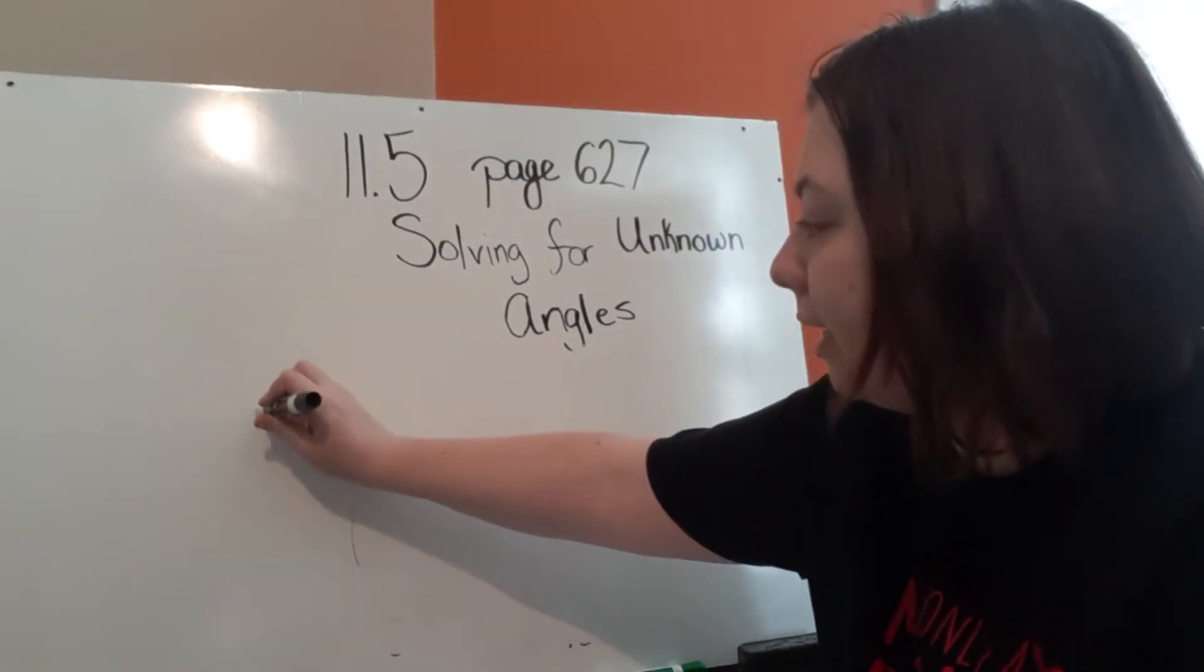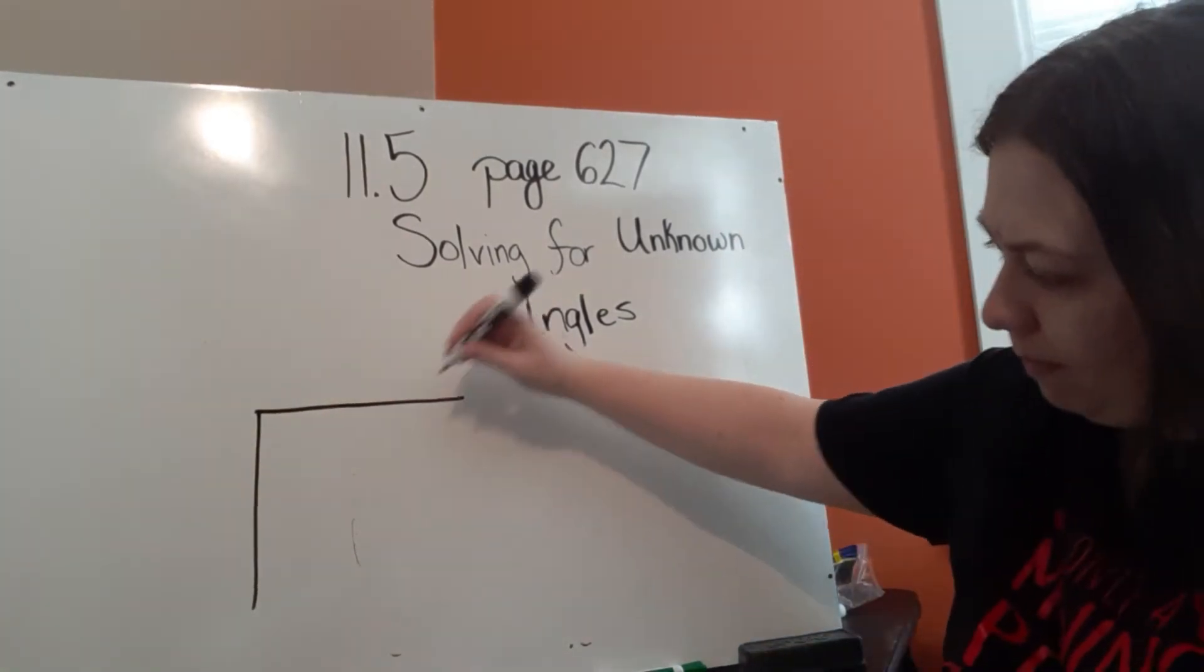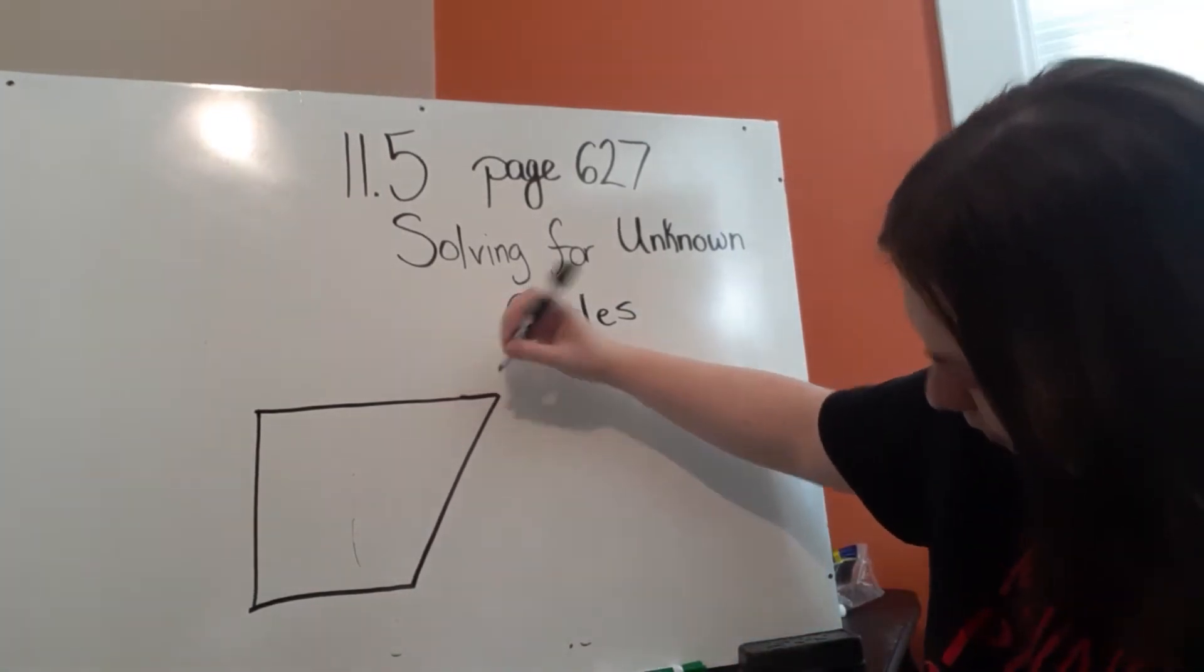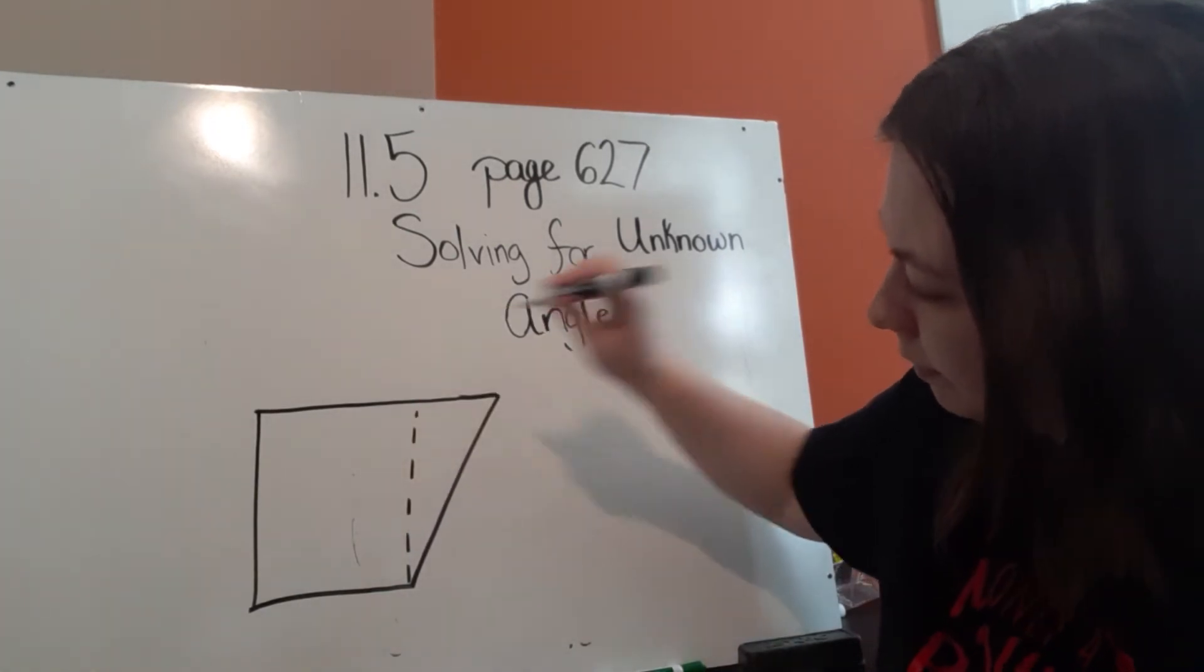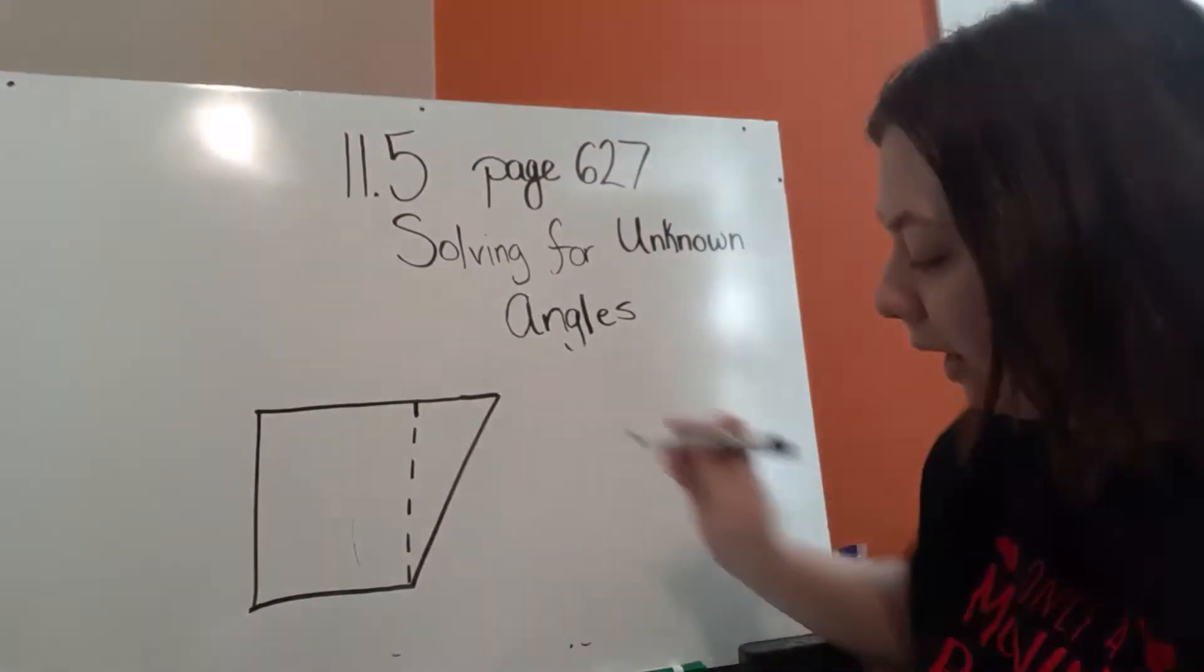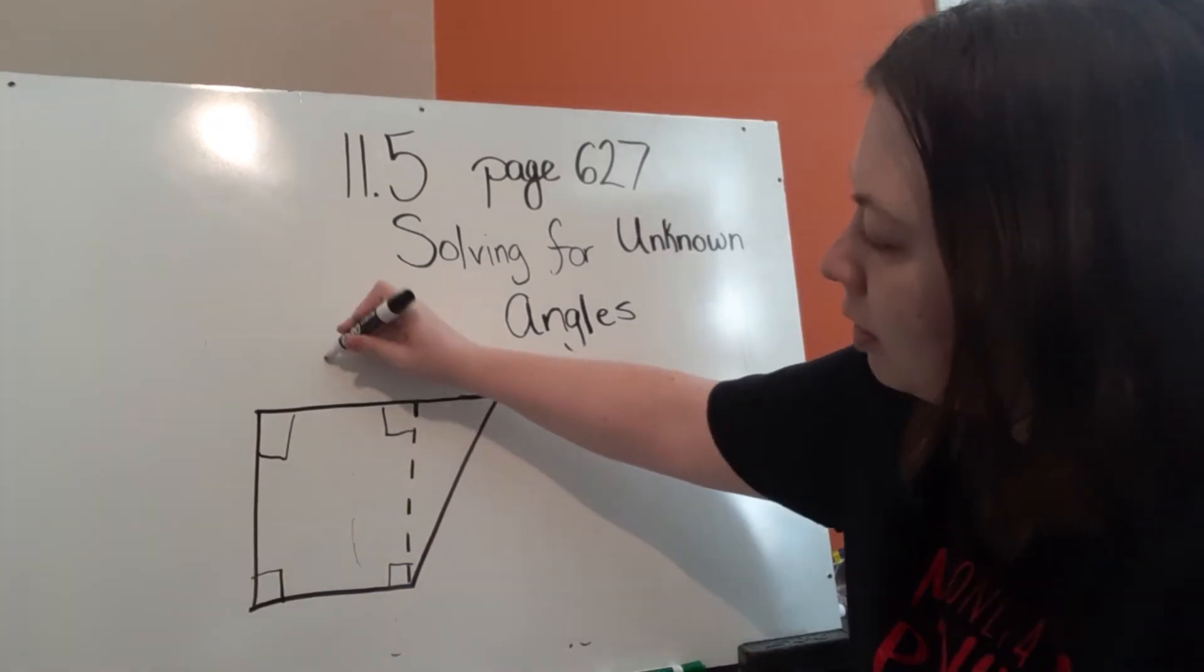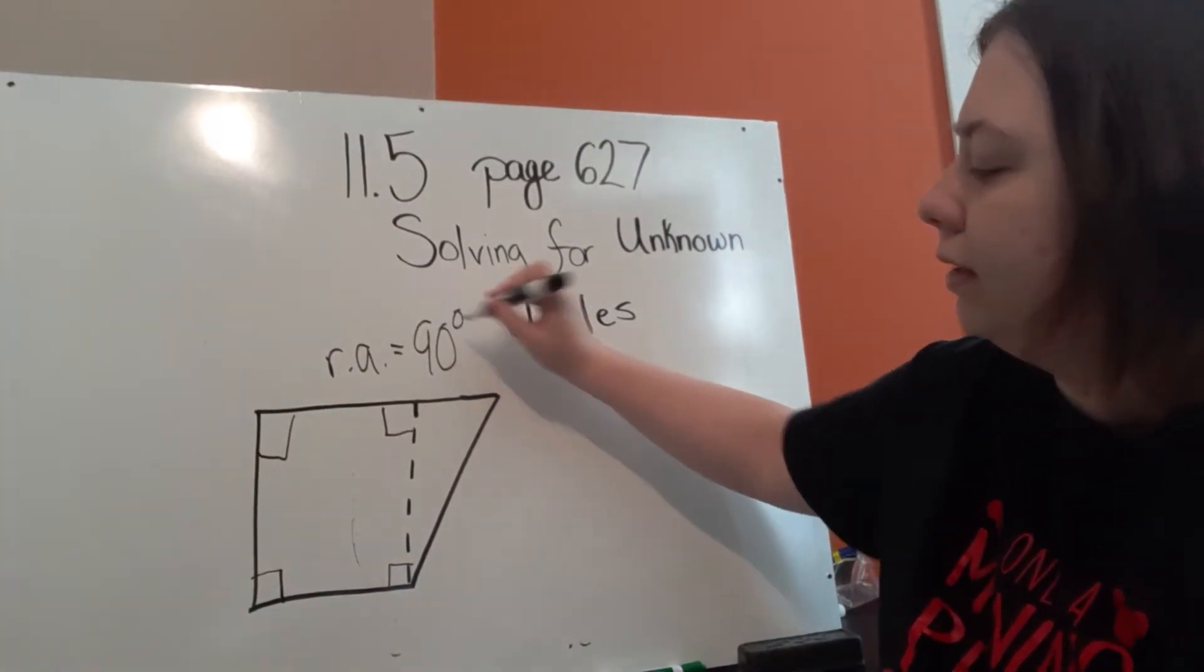Again, they're giving you a shape. Okay. Now, they've broken down the shape into it being a square. And again, we know that these squares are made up of right angles. Right angles equal 90 degrees.